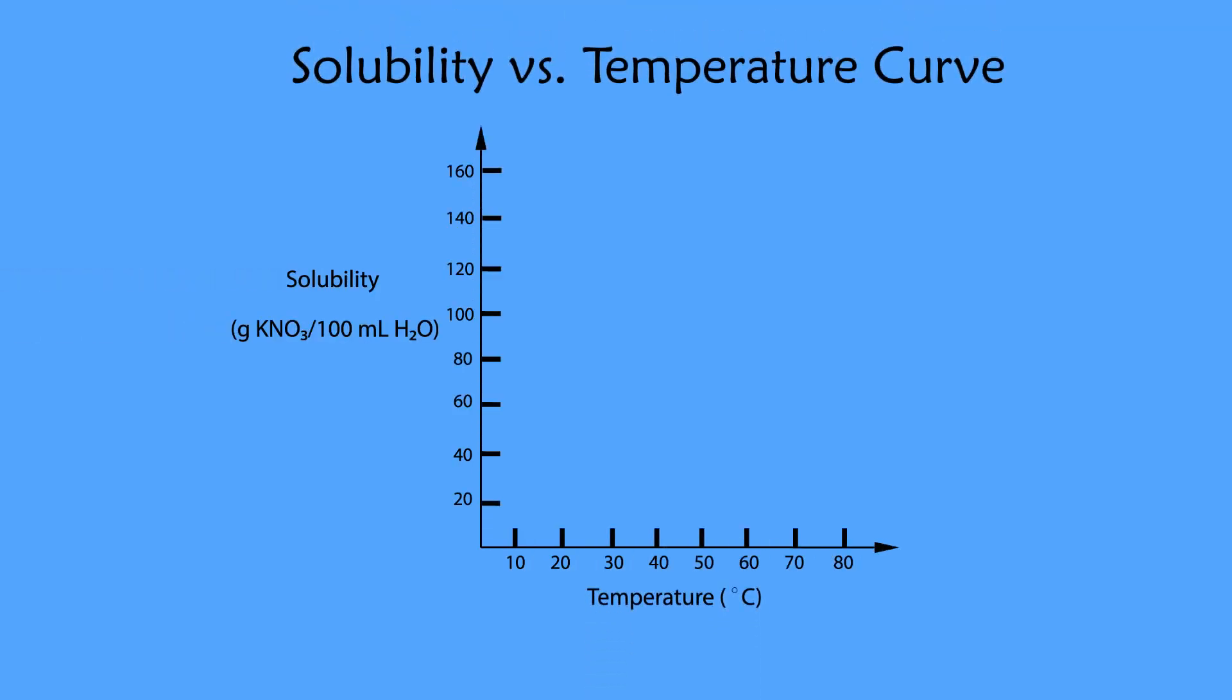Now you are going to use the information you discovered to draw a solubility versus temperature curve. The y-axis solubility is often expressed in grams of solute per 100 mL of water and you will need to convert your data into grams of potassium nitrate per 100 mL of water.